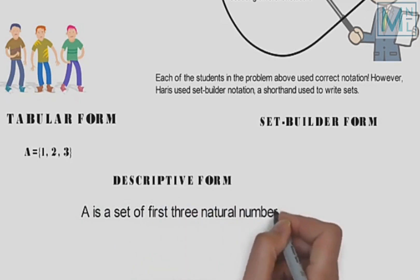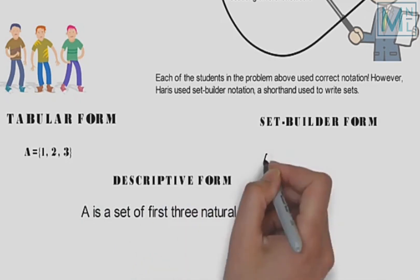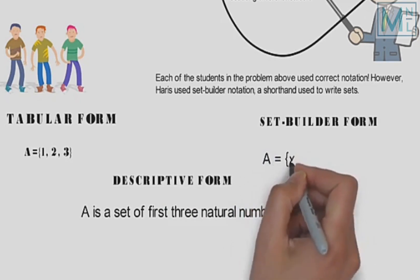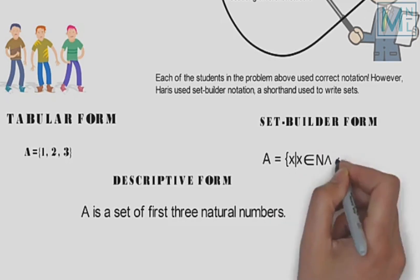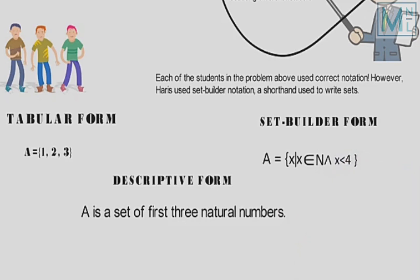Isi set ko hum set-builder mein likhenge: A is the set of all x such that x belongs to natural numbers and x is less than 4. Matlab ye ke A jo hai set hai un tamam elements ka, joh ke x taluk rakhta hai natural numbers se, matlab ye ke element jo hai woh taluk rakhta hai natural numbers se, and, or, x is less than 4, element jo hai woh 4 se chhote honge.